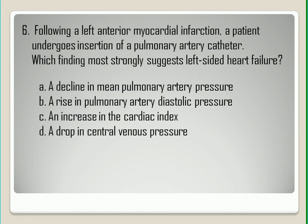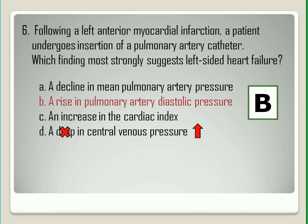Question Number Six. The correct answer is letter B. A rise in pulmonary artery diastolic pressure suggests left-sided heart failure. Central venous pressure would rise in heart failure. The cardiac index would decline in heart failure. And the mean pulmonary artery pressure would increase in heart failure.